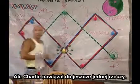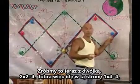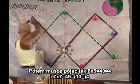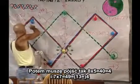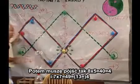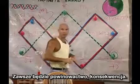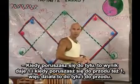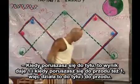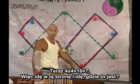Since Charlie brought up one other thing, let's do a 2 now. 2 times 2 is 4. 1 times 4 is 4. Then 8 times 5 is 40, which is 4. And 7 times 7 is 49, which is 4. It's always going to be a shear — consistent. One time you're moving backwards 1, or moving forward 1. The next time you're moving backwards 2, forward 2. Now 4 times 4 is 16, which is 7.